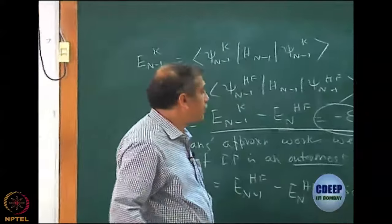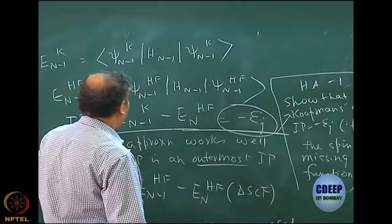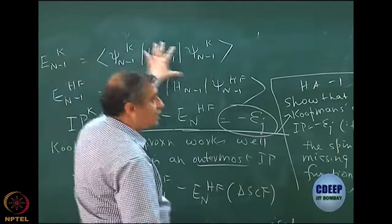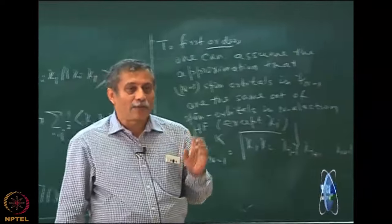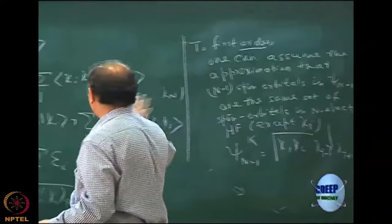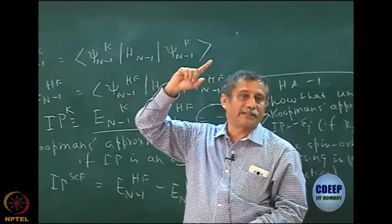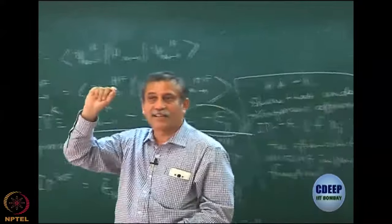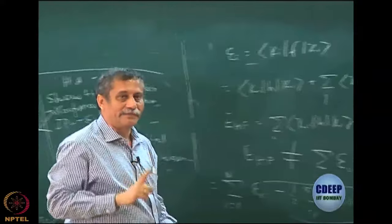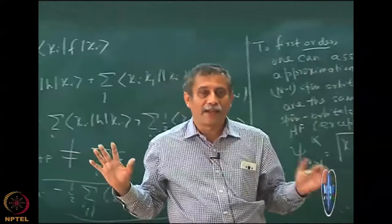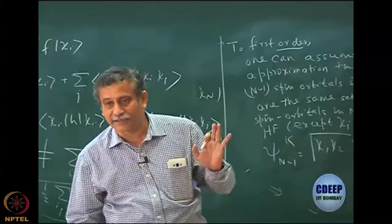With this background, you should be able to do the assignment quite easily. Remember, you have to use the Slater rule to write down E(N-1) for Koopmans' theorem — that is something I am not going to do here. When you do the Slater rule, remember the spin orbitals are the same: same chi_1, chi_2, except chi_j won't be there. So when you do the summations, the summation will be only over N minus 1 spin orbitals, barring chi_j.